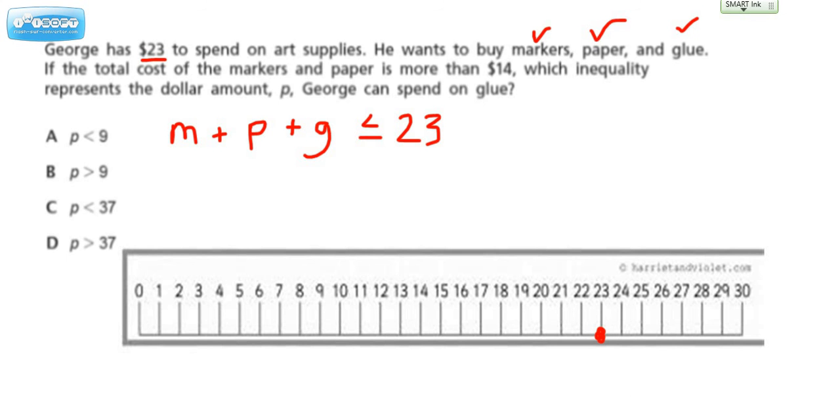Now let's take this part that says the total cost of the markers and paper is more than $14. So this amount here is greater than $14. Let's map that out on the number line.